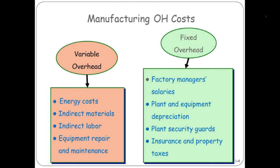Fixed overhead are really those things that don't matter — unless you have significant changes in volumes, like having to build a new factory. But if you're just within the same factory doing the same work, these costs tend to stay fixed no matter what your volumes are.